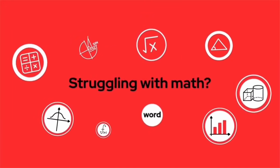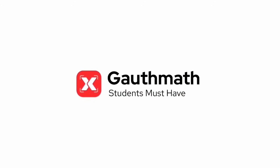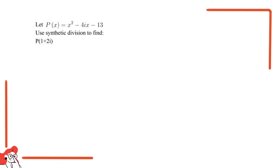Welcome to the Goth Math class, let's make math so easy. Hello everyone, I'm your teacher for this question. The question says let P(x) equal to x squared minus 4ix minus 13. Use synthetic division to find P(1 plus 2i) in parentheses.